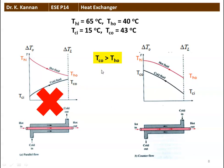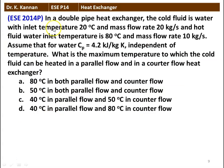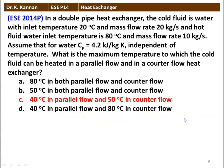The next question: in a double pipe heat exchanger, the cold fluid is water with inlet temperature 20°C and mass flow rate 20 kg/s, and the hot fluid is water with inlet temperature 80°C and mass flow rate 10 kg/s. Specific heat of water is 4.2 kJ/kg·K. What is the maximum temperature to which the cold fluid can be heated in parallel flow and counter flow? Options: 80°C in both; 50°C in both; 40°C in parallel flow and 50°C in counter flow; or 40°C in parallel flow and 80°C in counter flow. The correct answer is option C — 40°C in parallel flow and 50°C in counter flow.